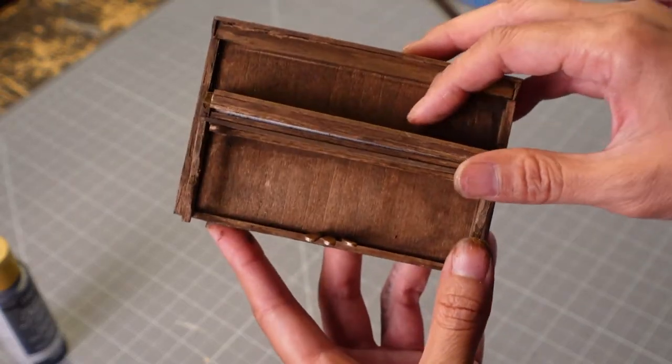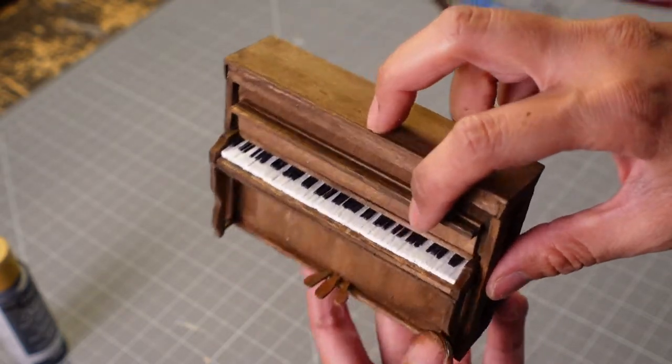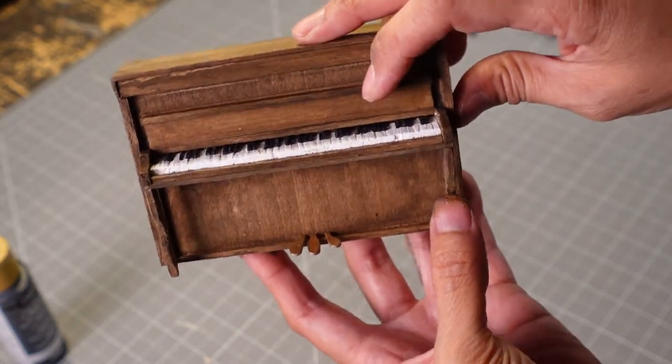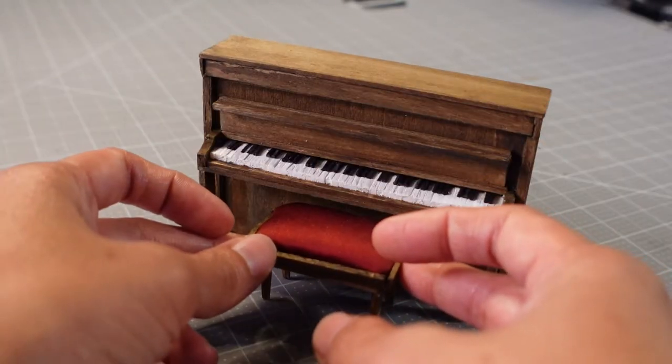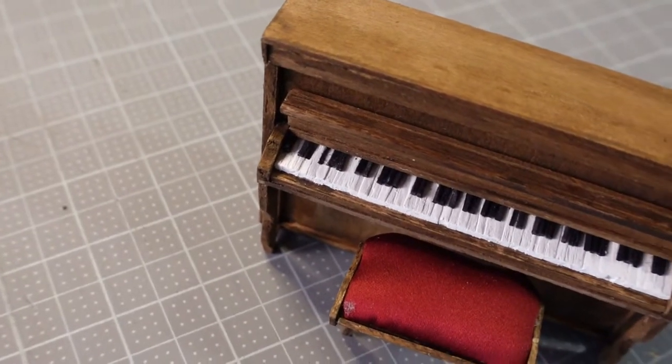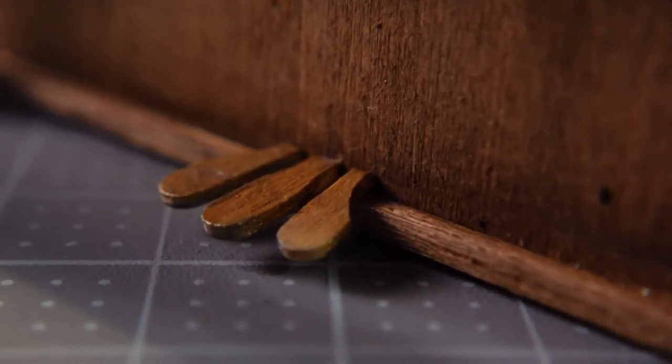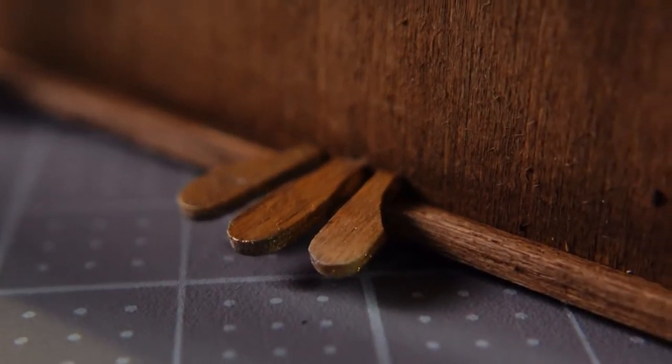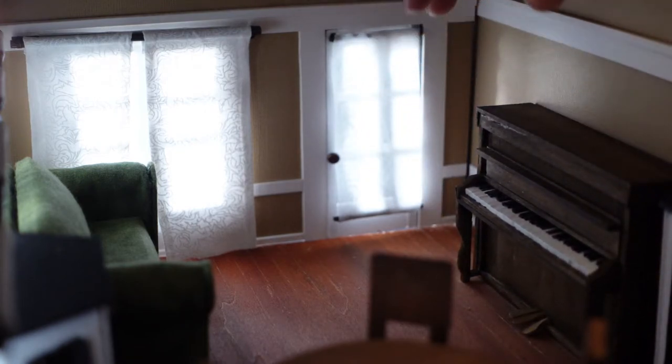There you have it. The finished piano. I'm quite proud of this piece. Again, because it's the first time I've ever made a piano, and I didn't expect it to turn out this well for my first time around. The next time around, I think I would like to make the keys out of a different material, and also just make a different style piano altogether. But that's how I made this piano for my miniature set. Please let me know if you have any questions. I'd love to answer anything that I can. I hope you enjoyed this video. I'll see you in the next one.